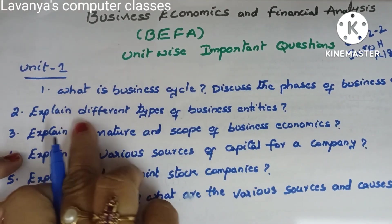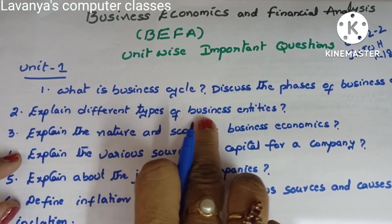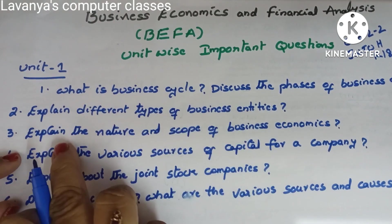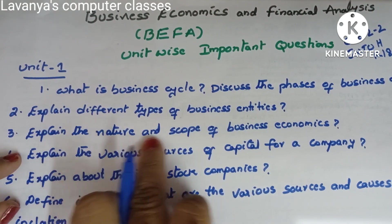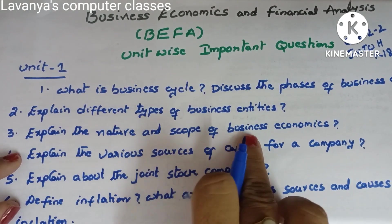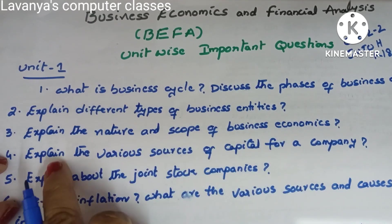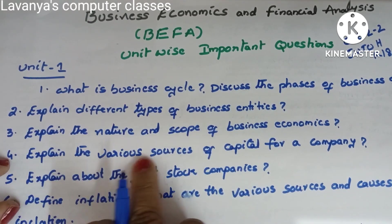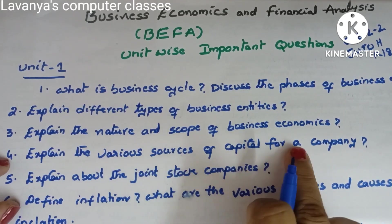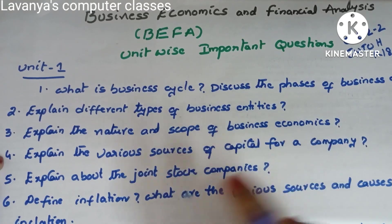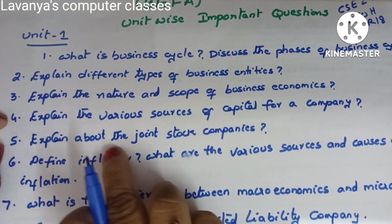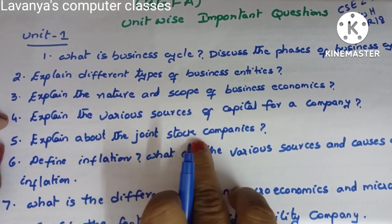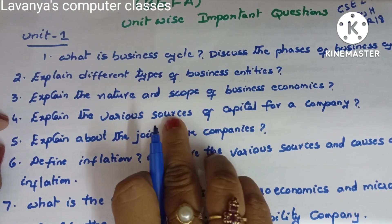Second question: explain different types of business entities. Third: explain the nature and scope of business economics. Next: explain the various sources of capital for a company. Fifth question: explain about joint stock companies — an important question.